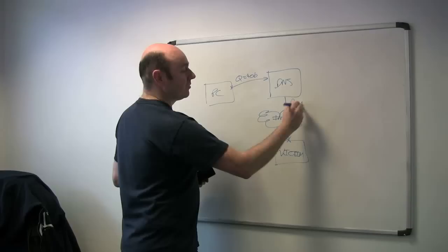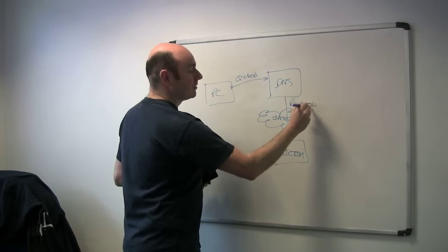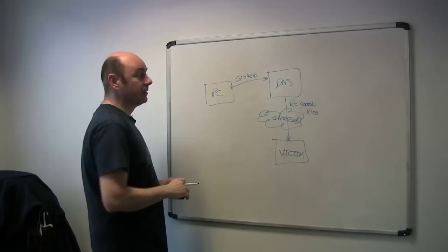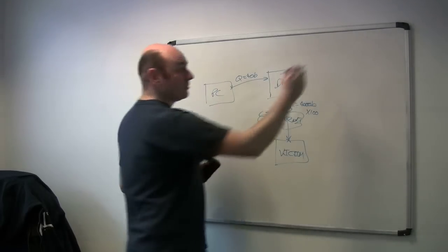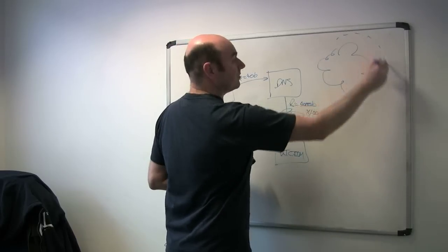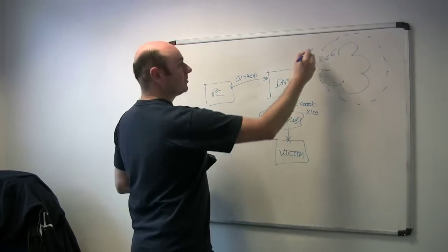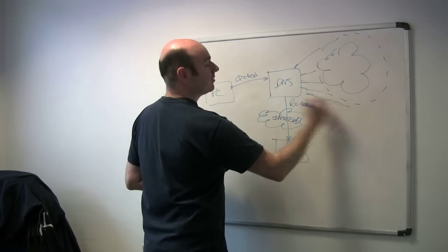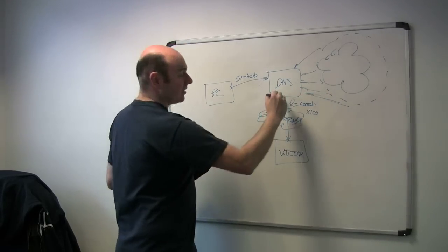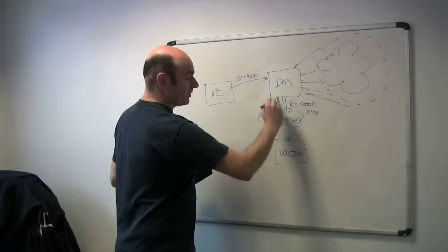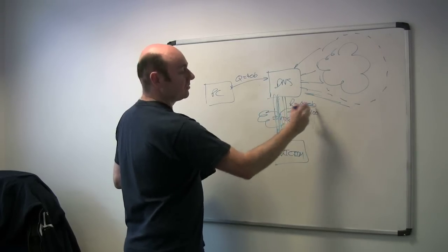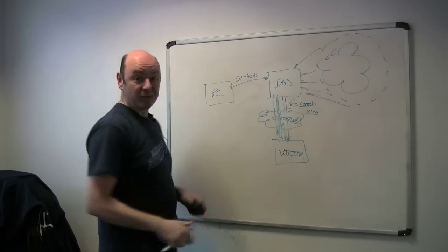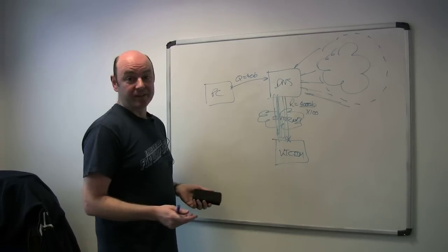And remember that response was 4000 bytes, which was our times 100 amplification factor. Now let's say for instance we've got control of a huge botnet with thousands of PCs all sending 40-byte queries to the DNS server. We've now got all these responses coming down — each one 4K — and you can see quite quickly we're generating significant quantities of traffic. And that is your classic DNS amplification attack.